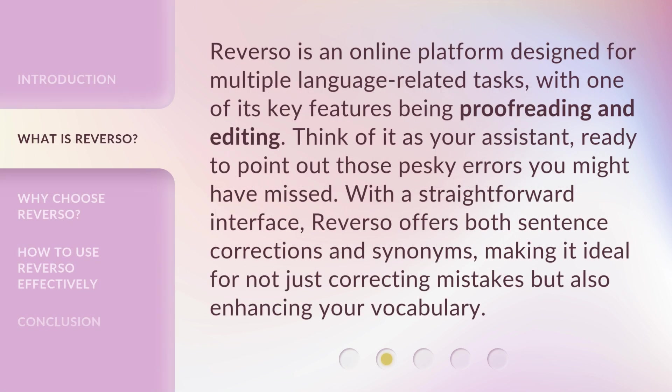Reverso is an online platform designed for multiple language-related tasks, with one of its key features being proofreading and editing. Think of it as your assistant, ready to point out those pesky errors you might have missed. With a straightforward interface, Reverso offers both sentence corrections and synonyms, making it ideal for not just correcting mistakes, but also enhancing your vocabulary.